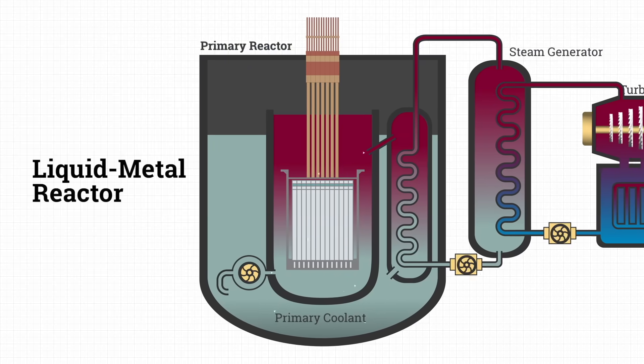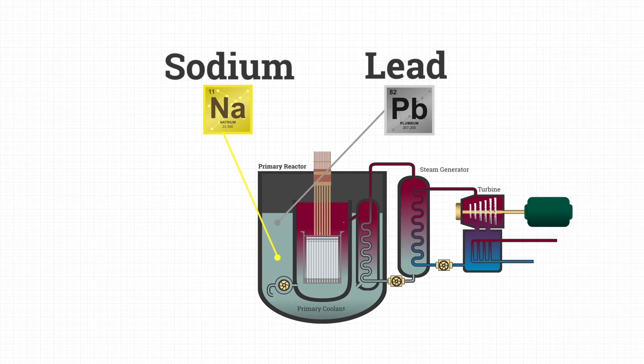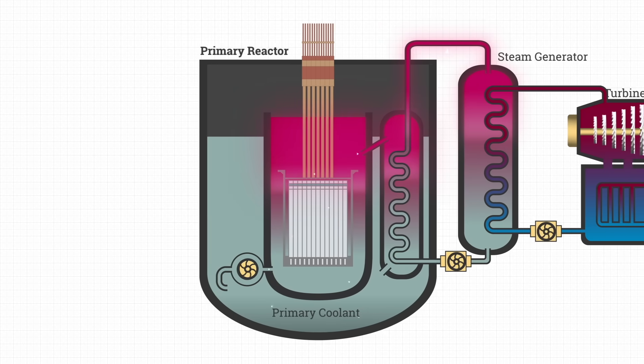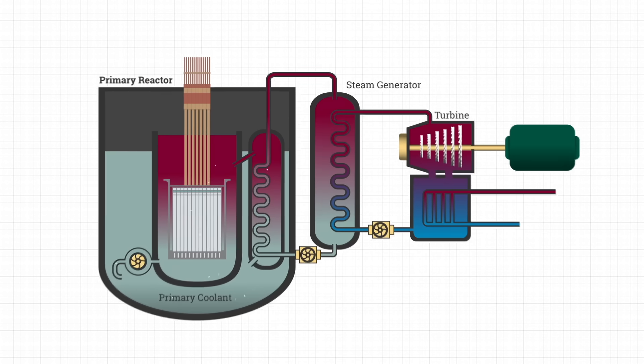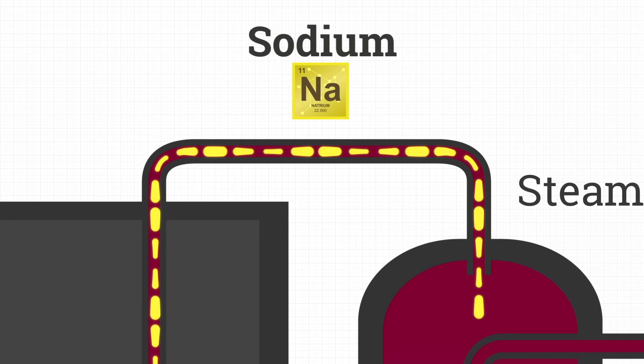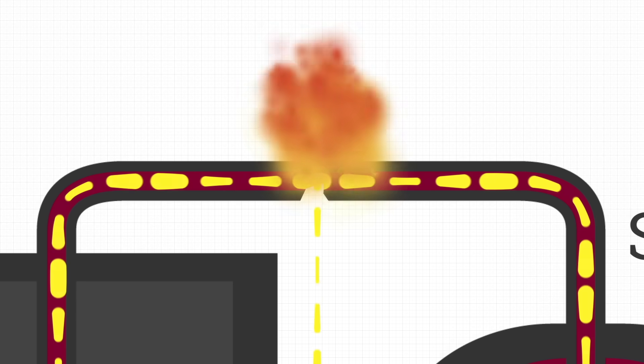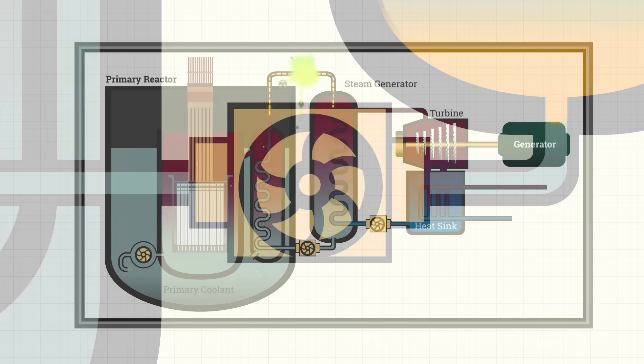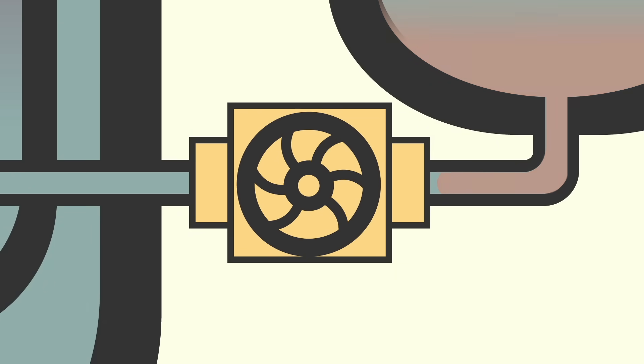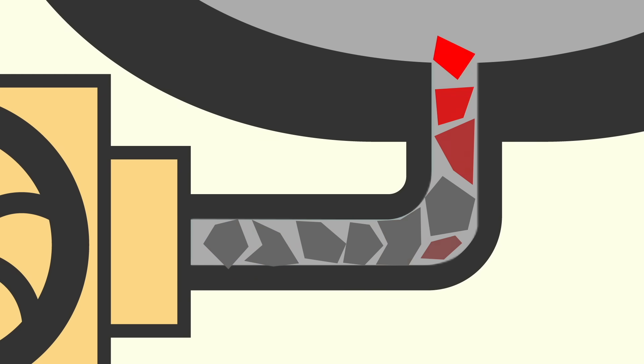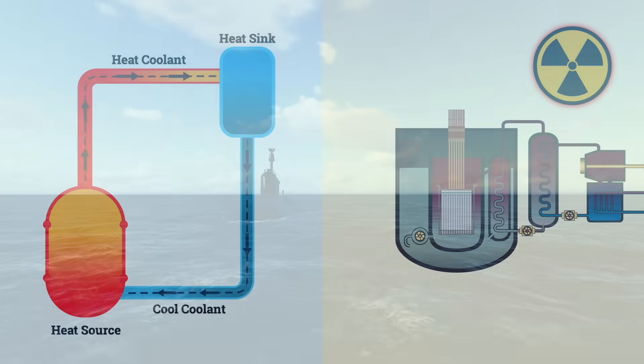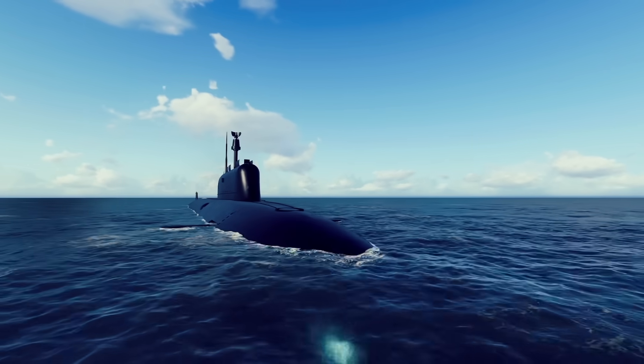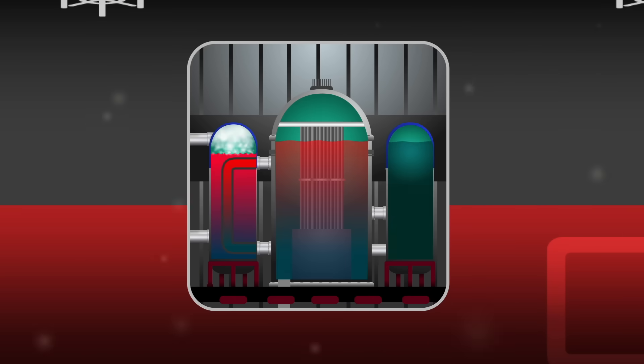Then there's the liquid metal reactor, where molten metal, like sodium or lead, replaces water as the coolant. Metal carries far more heat than water, allowing for smaller turbines and more compact reactors. But it comes at a price. Molten metals are reactive, especially sodium. If they leak, they can ignite on contact with air or water. They also become highly radioactive over time, making containment far more critical. But what if the system cools down too far? Well, the metal solidifies inside the pipes, blocking the entire reactor in place. So while liquid metal reactors offer intriguing advantages, they demand extreme precision and are rarely used in frontline naval vessels.